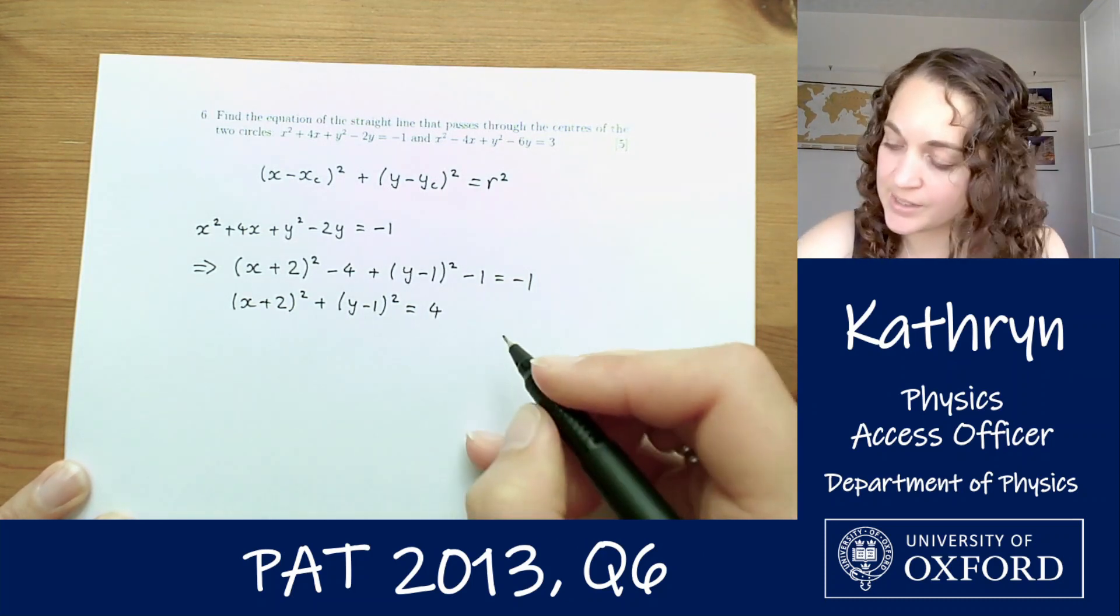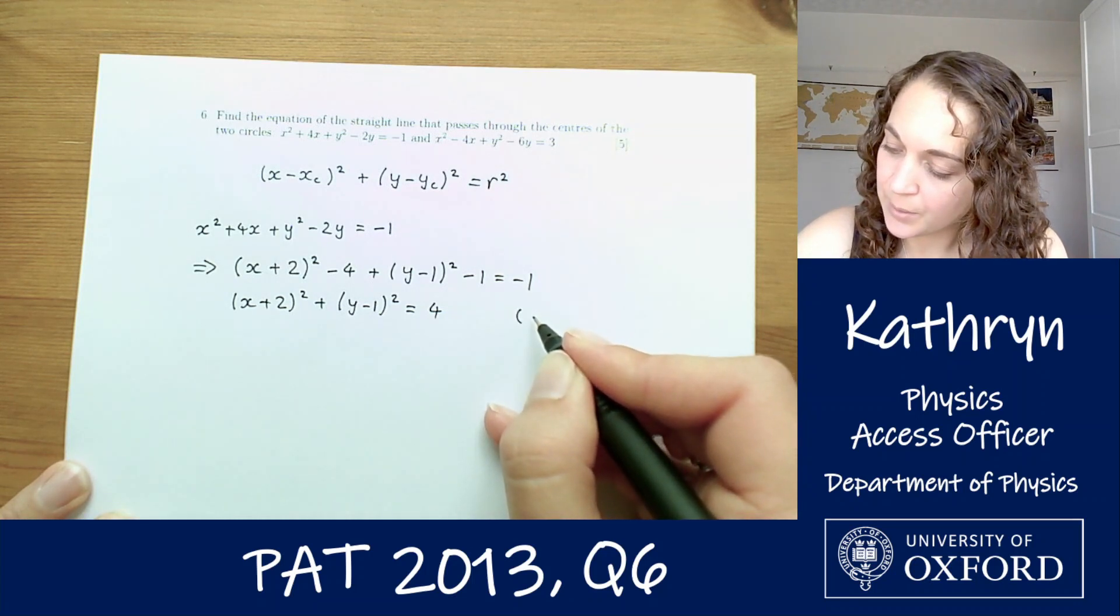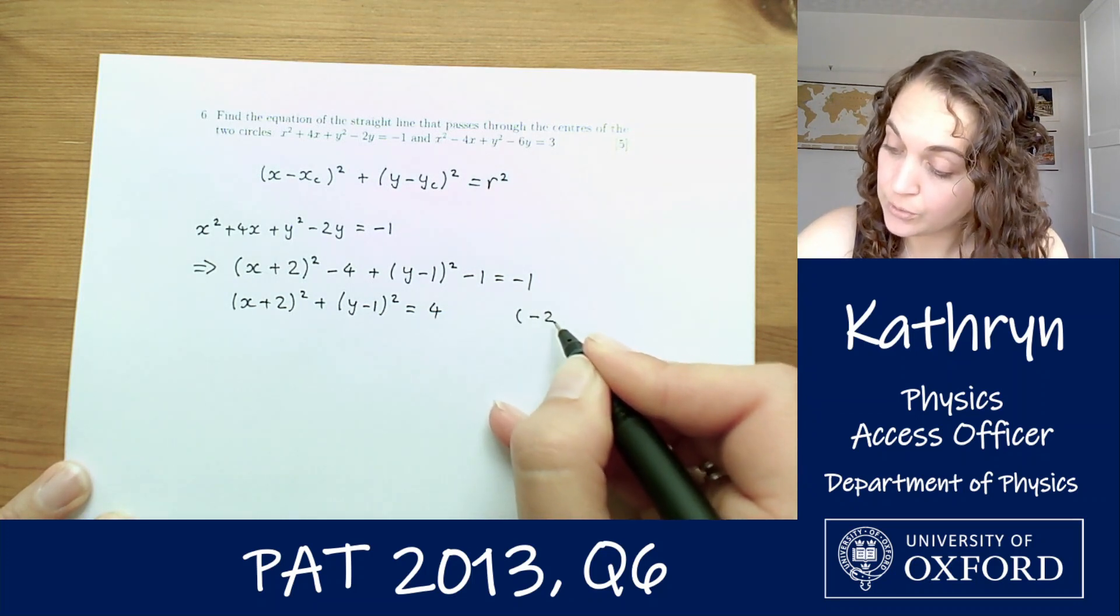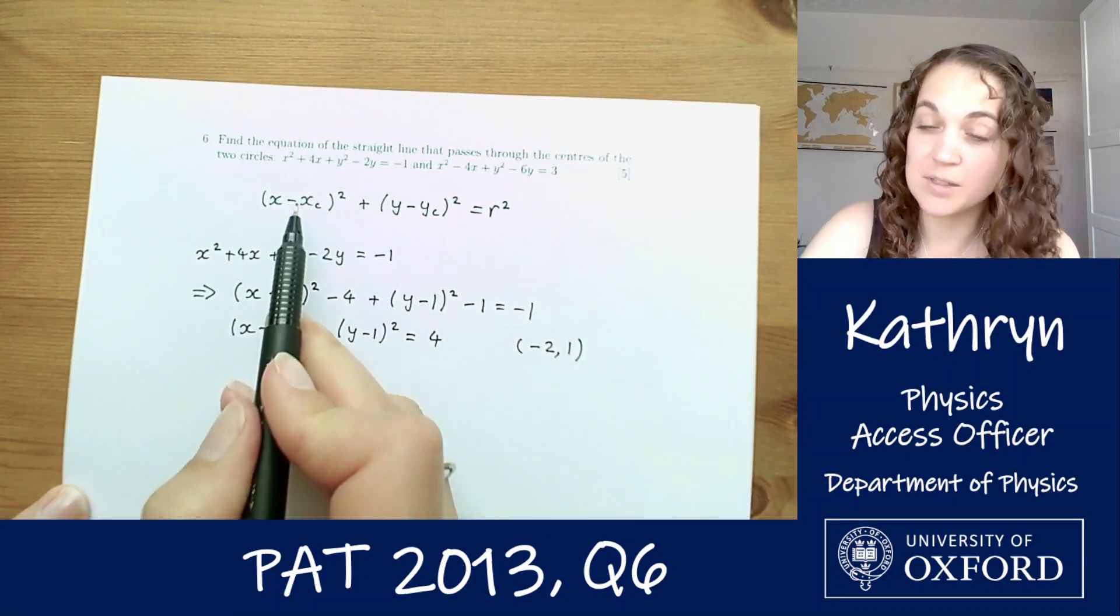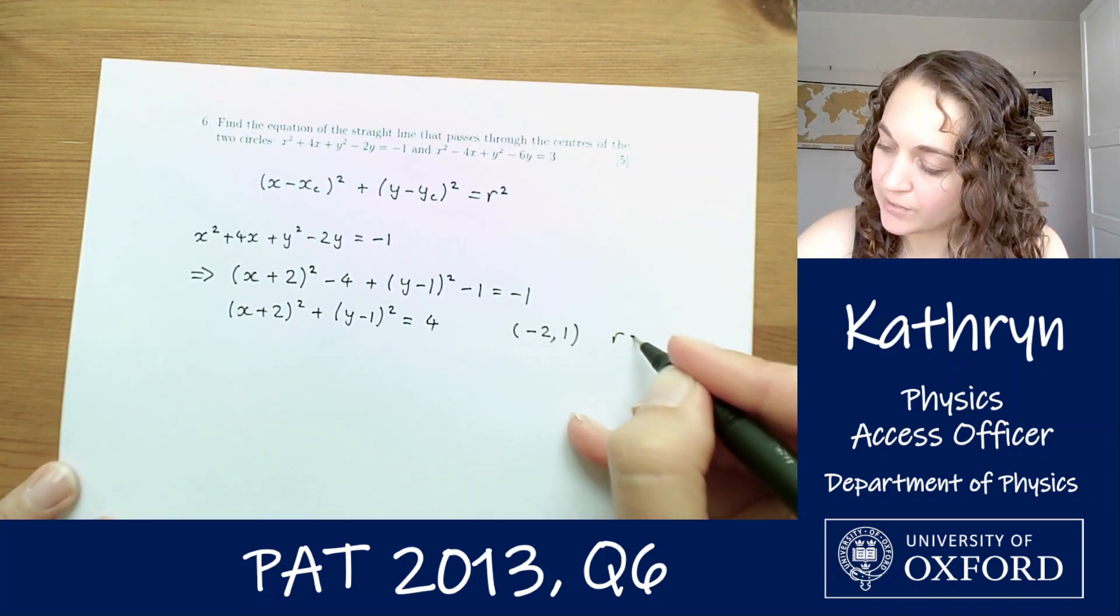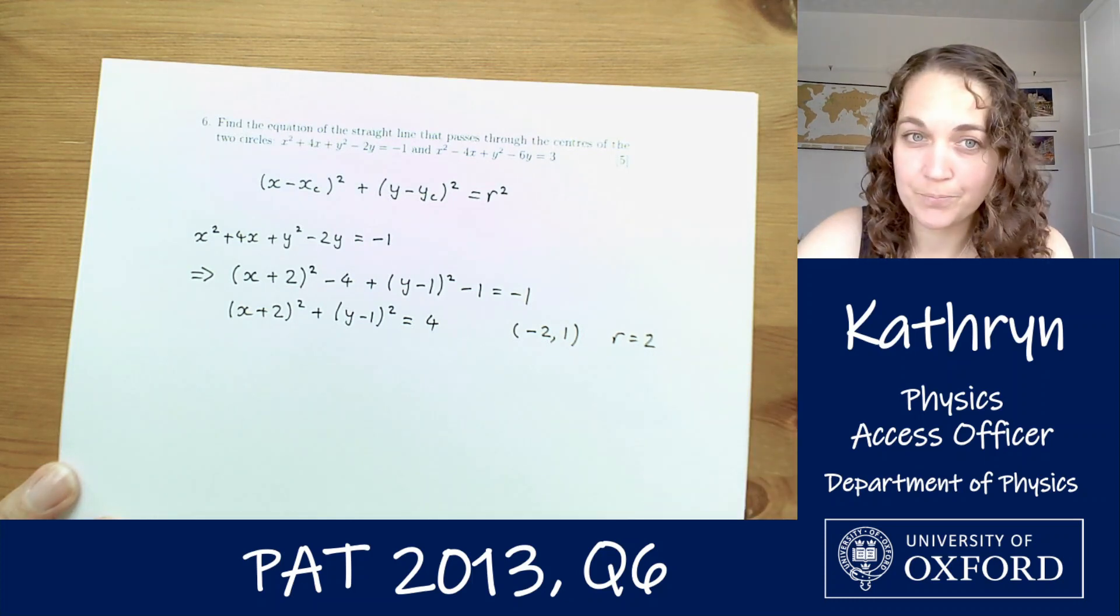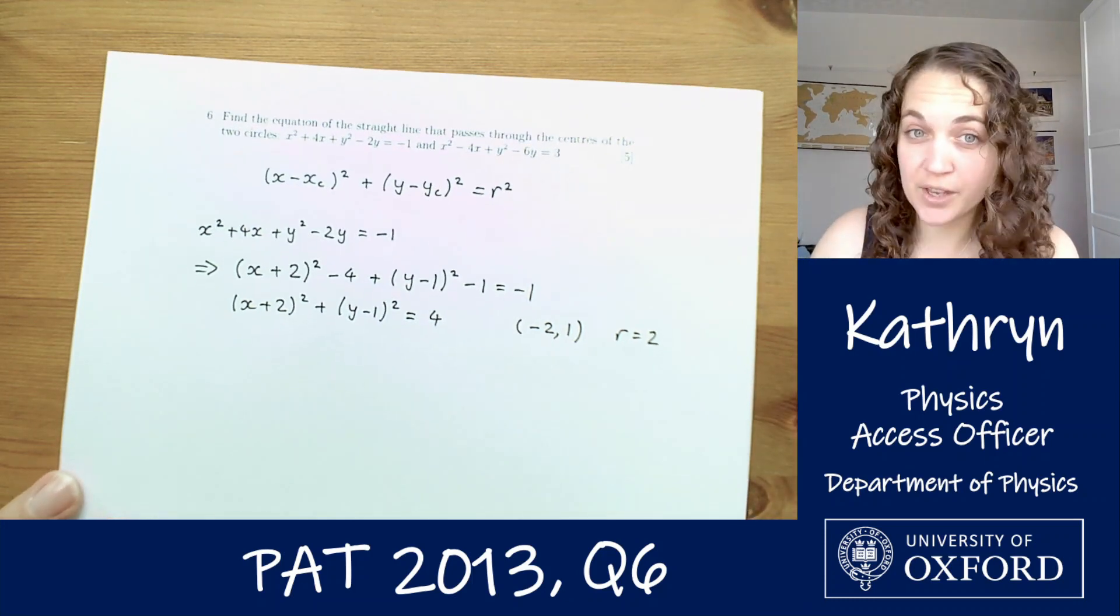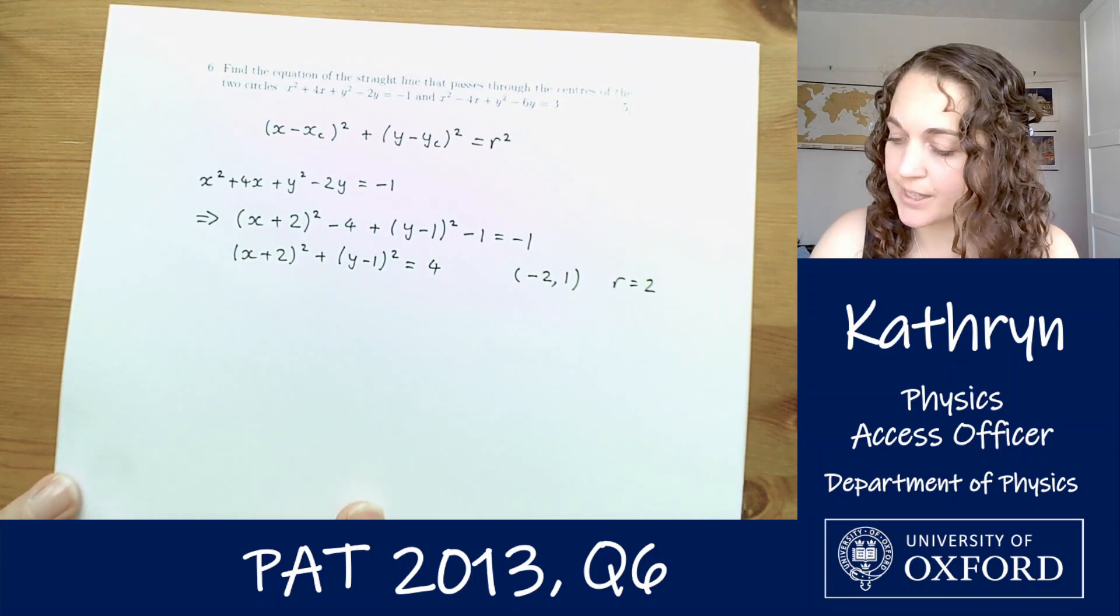So this is a circle centred at minus 2, 1, noting that it's minus xc up here, with a radius of 2. So that's the first circle sorted, we now know the centre of that one, let's do the same thing for the second circle.